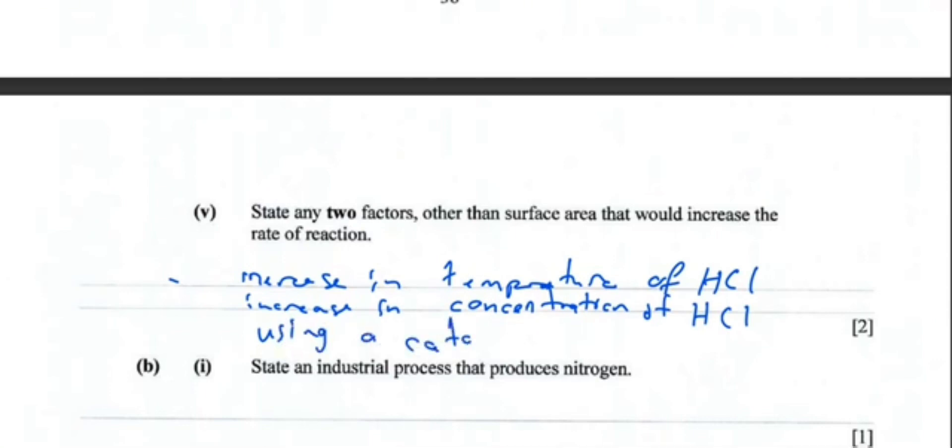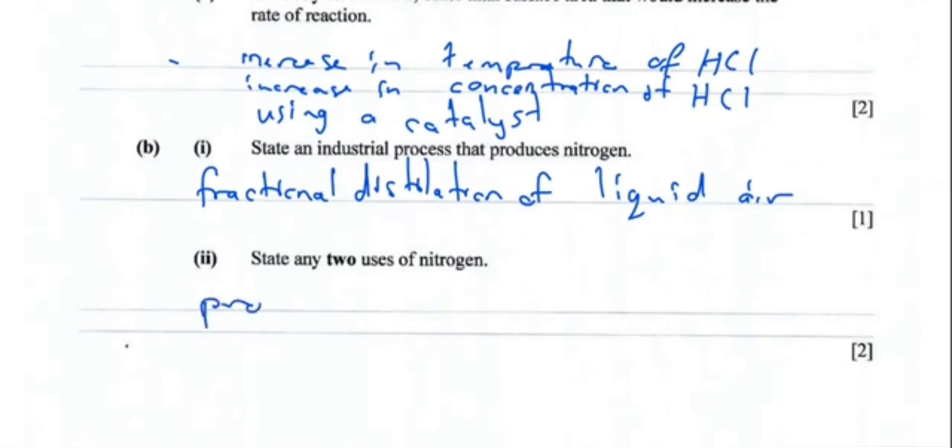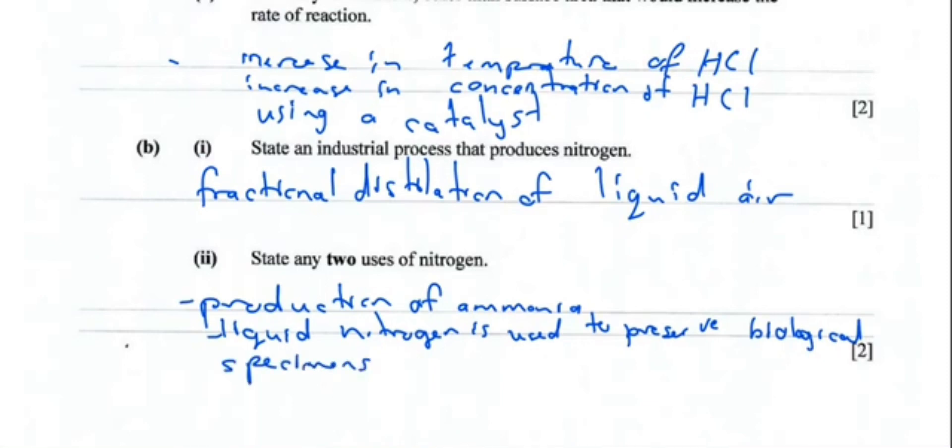Next question: state an industrial process that produces nitrogen. This is the fractional distillation of liquid air. State any two uses of nitrogen. We've already looked at one of them - production of ammonia. Liquid nitrogen is used in preservation to preserve biological chemical specimens, for example vegetables, organs which are being donated, sperm, eggs, etc. This marks the end of section C. Watch the next video to enjoy section D.